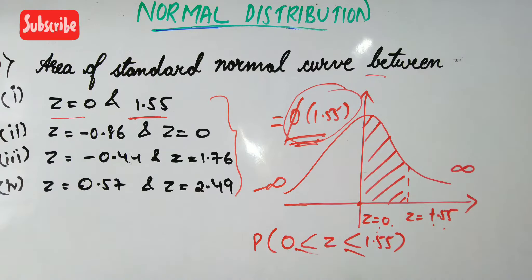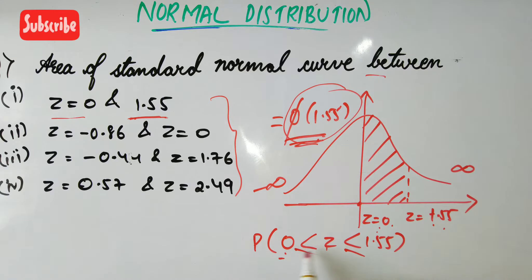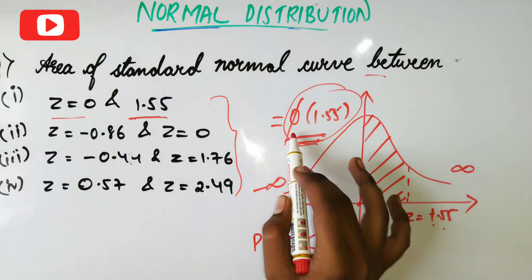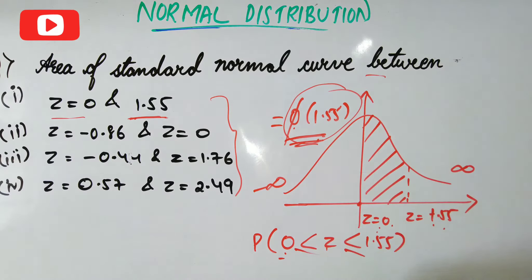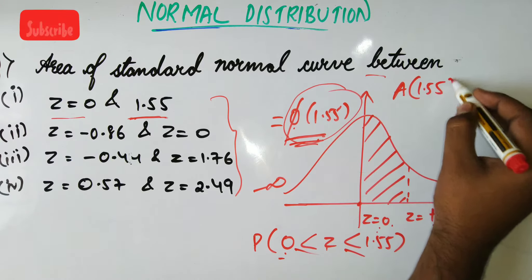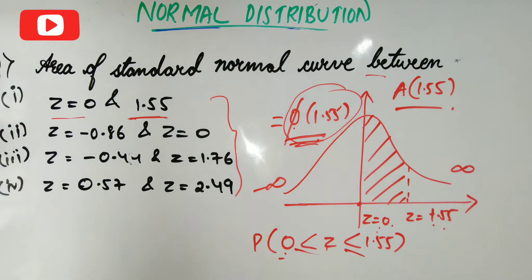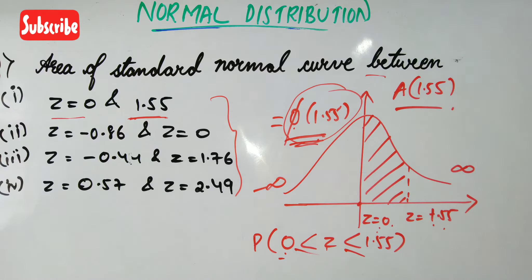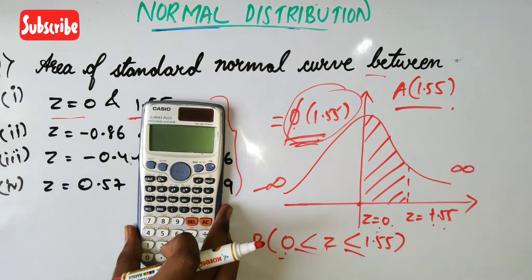This is the meaning: the probability that z lies between 0 and 1.55, which is nothing but φ(1.55). Some textbooks may use the variable A also — A(1.55) — it is the same thing. Now, how to calculate φ of this value? A normal probability table is also available, but I'll show you how to calculate it using a calculator.